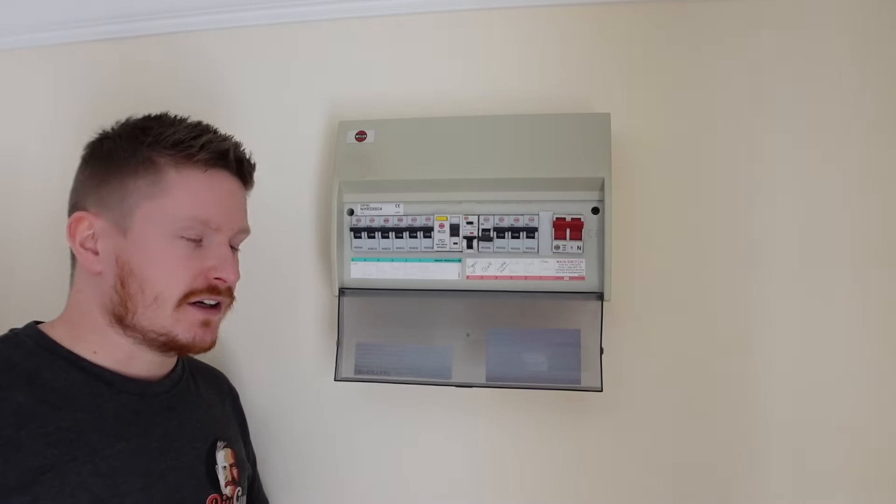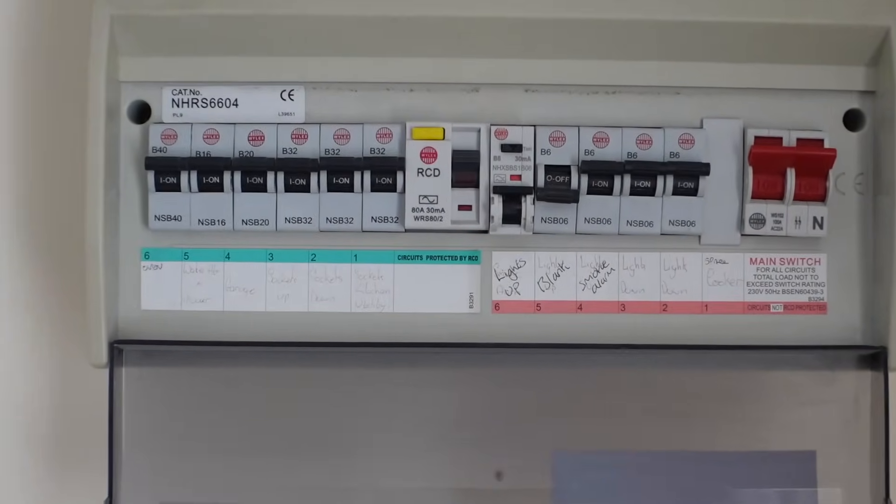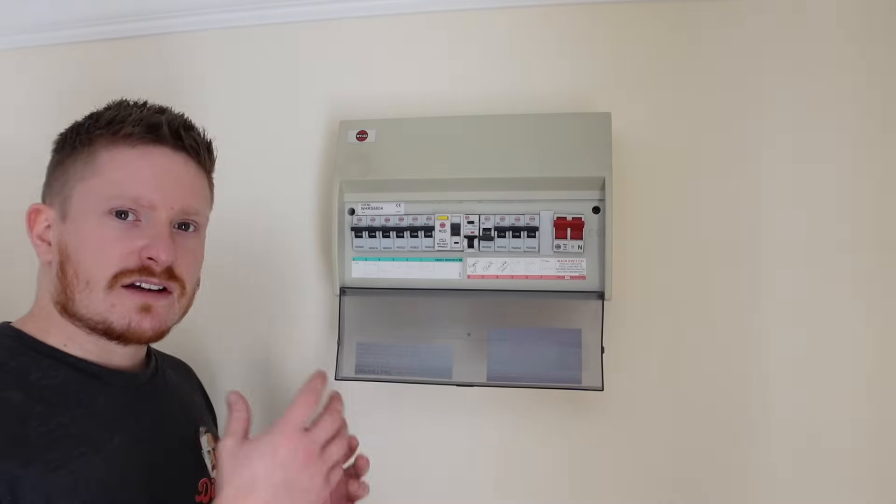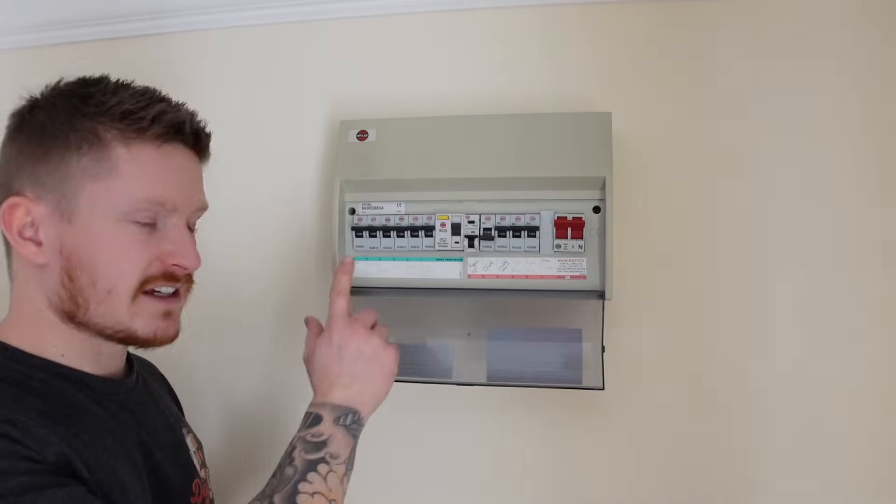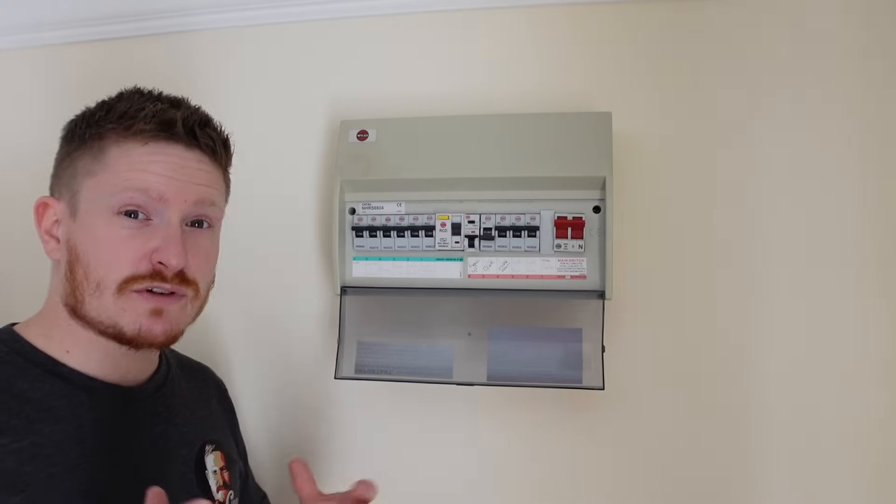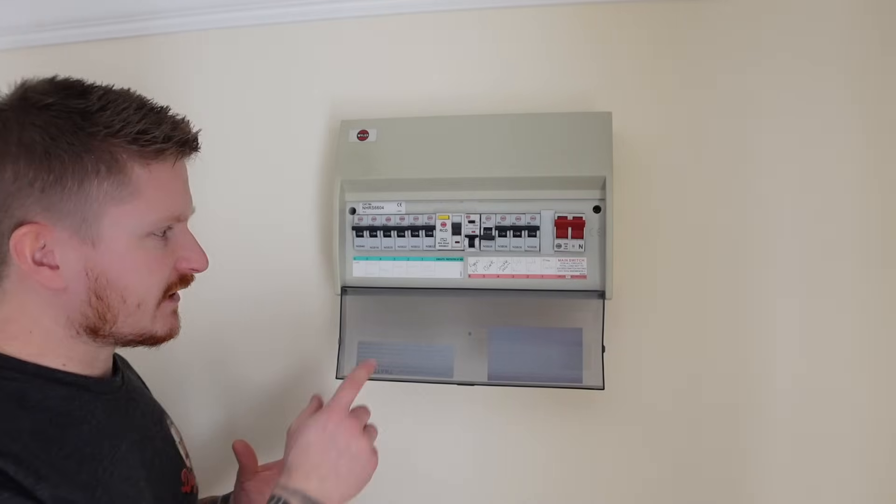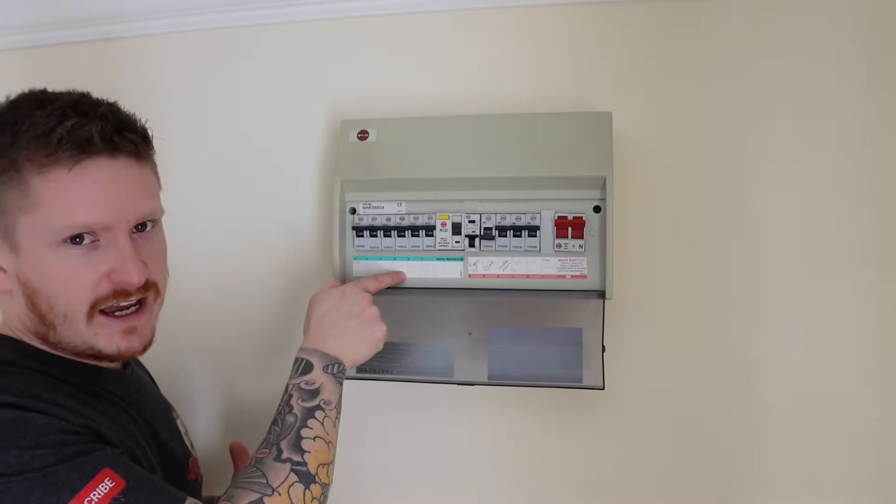So here we are at the consumer unit. Inside the consumer unit you'll find a series of MCBs or miniature circuit breakers and each one of those supplies power to a circuit in your home. However, we won't 100% trust that these are labelled up correctly and that's why for safety reasons we're using other means to prove dead before we go and change that socket.